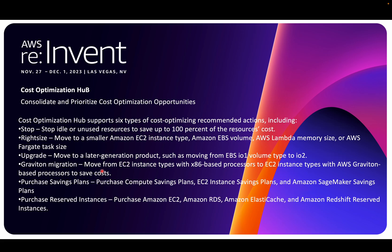Cost Optimization Hub supports six types of recommendation actions — it won't auto-remediate, it gives you recommendations so you can see estimated savings. First is 'Stop': if resources are idle, stop them and see 100% cost savings. Second is 'Right-sizing': moving to a smaller EC2 instance type, EBS volume, Lambda memory size, or Fargate task size. If you're running high-end servers without using their full potential, drill down to a smaller size.